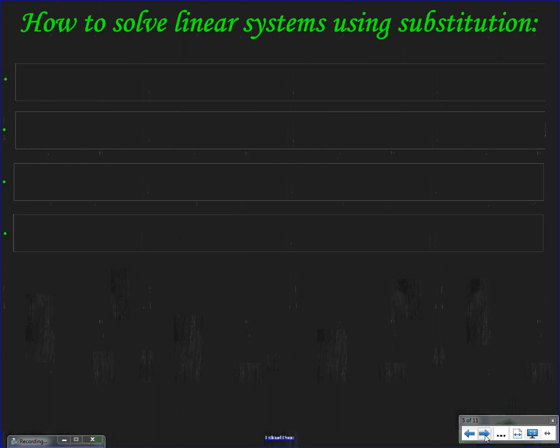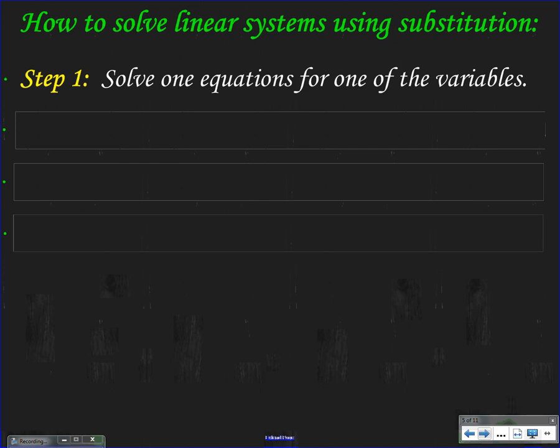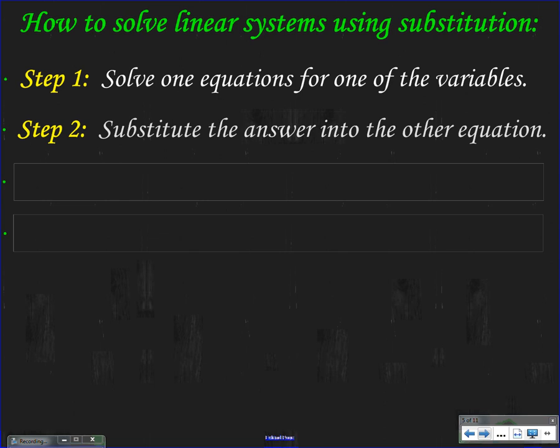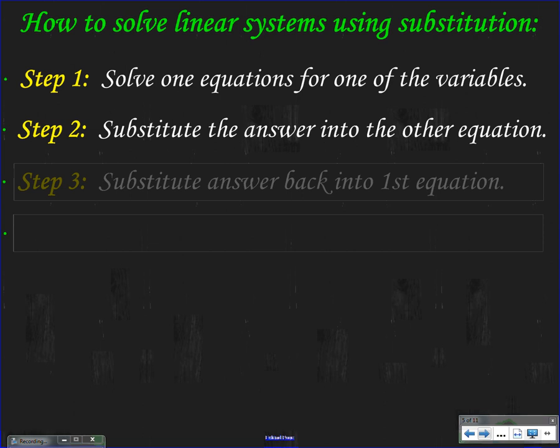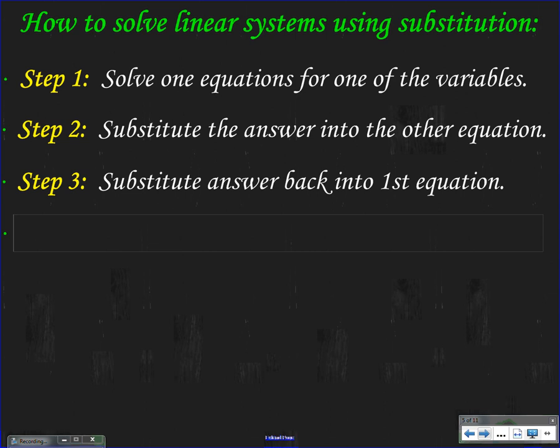We have four steps to solve linear systems using substitution. Step one: solve one equation for one of the variables. Step two: take that variable — what we just solved for — and substitute that answer into our other equation. I know this might be a little confusing right now, but I'm going to show you the steps as we go through the problem. Step three: once I get an answer from step two, I'm going to take that answer and substitute it back into my first equation.